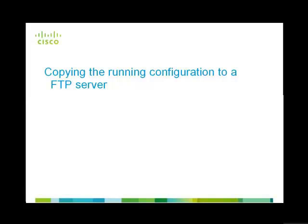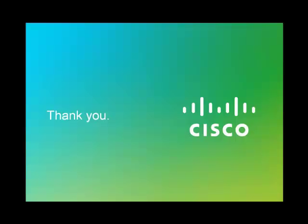The third method of recovering the pre-shared key is by copying the running configuration to an FTP server. This method is similar to the previous method of copying the running configuration to a TFTP server. The only difference is the command used here. The command used is copy running config FTP. I hope the information provided in this video was useful. Do post your feedback and suggestions on what videos you would like to see on Cisco Support Community. Thank you.